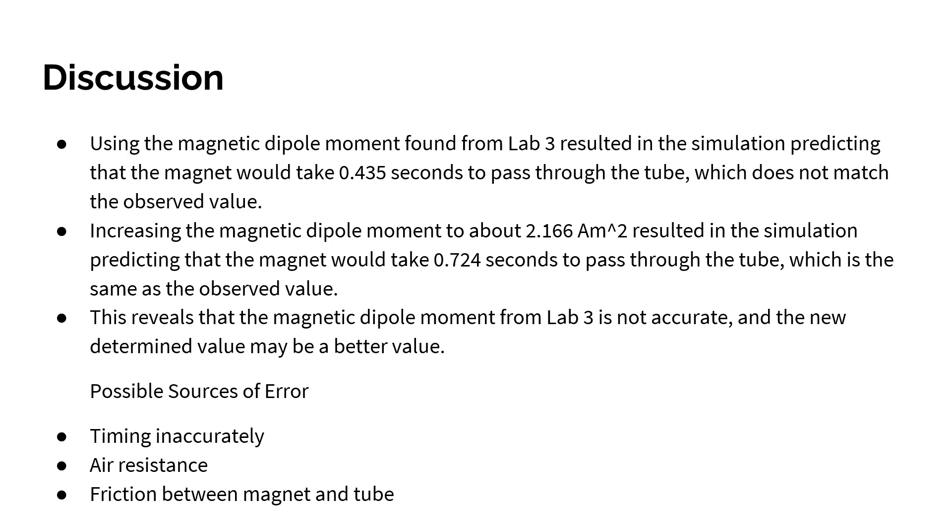Increasing the magnetic dipole moment to about 2.166 ampere-meters squared resulted in the simulation predicting that the magnet would take 0.724 seconds to pass through the tube, which is the same as the observed value. This reveals that the magnetic dipole moment from Lab 3 is not accurate, and the new determined value may be more accurate.